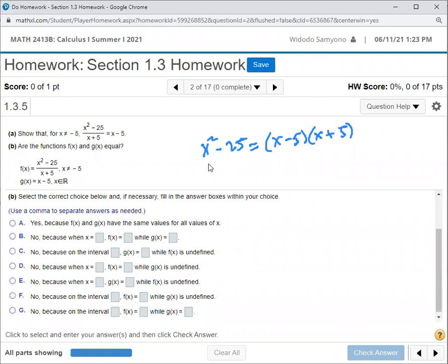Okay, and the result is the expression x minus 5. Right. So if you divide this with x plus 5, you can cross out this and this, right.